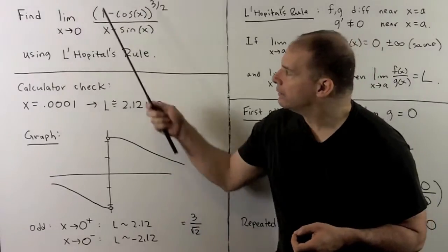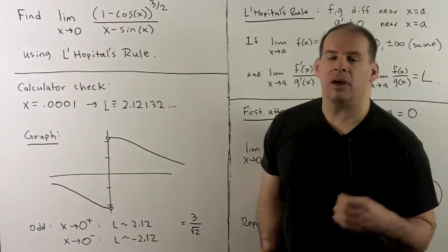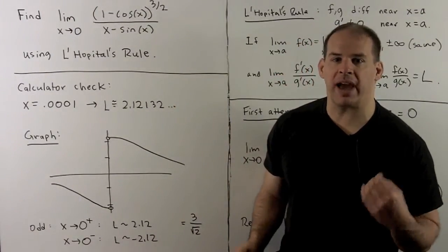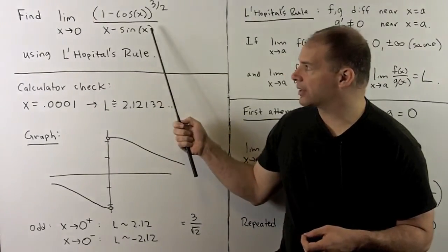We have, find the limit as x goes to zero, one minus cosine of x raised to the three-halves power, divided by x minus sine of x.